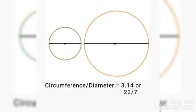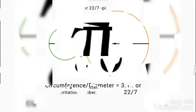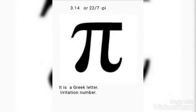3.14 or 22 by 7 are the approximate values of pi. Pi is a Greek letter. It is the 16th letter of the Greek alphabet.